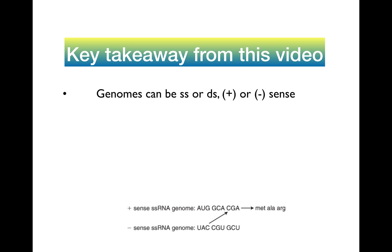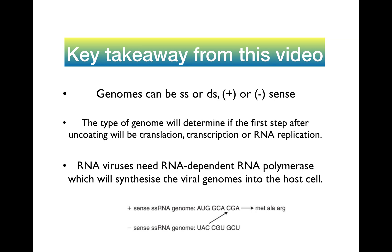Key takeaways: genomes can be single-stranded or double-stranded, positive or negative-sense, and the type of genome will determine if the first step after uncoating will be translation, transcription, or RNA replication. RNA viruses need RNA-dependent RNA polymerase — remember the recipe with the ingredients — which will synthesize the viral genomes into the host cell. Positive-sense strands only require one step to produce the polypeptides, which is translation. However, negative-sense strands must first be converted to positive-sense strand, and then translated.